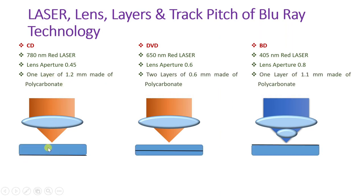Regarding layers: a CD has one layer of 1.2 mm thickness made of polycarbonate; a DVD can have two layers of 0.6 mm thickness, also polycarbonate; a Blu-ray disc has one layer of 1.1 mm thickness, also polycarbonate. Some versions of Blu-ray disc have two layers, but here we are showing the single-layer version, which will be discussed further.